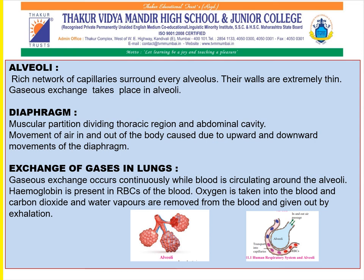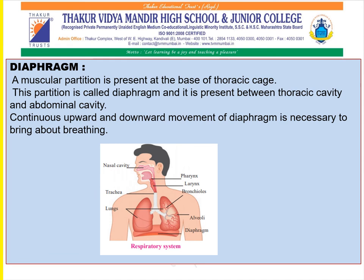Gaseous exchange occurs while blood is circulating around the alveoli. Hemoglobin is present in the red blood cells of the blood. Oxygen is taken into the blood, and carbon dioxide and water vapors are removed from the blood and given out by exhalation.